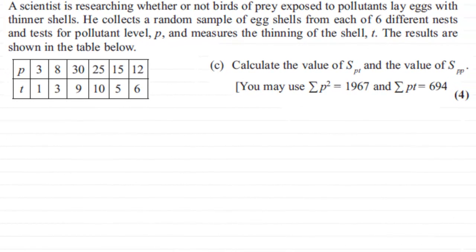Hi, now in this next part of the question we're asked to calculate the values of s_PT and the values of s_PP, and we're also given the summary statistics: Sigma P squared equals 1967 and Sigma PT equals 694.